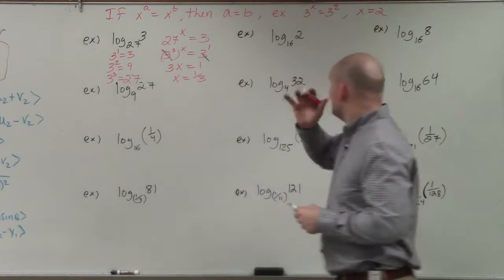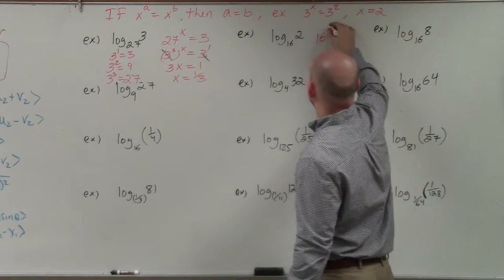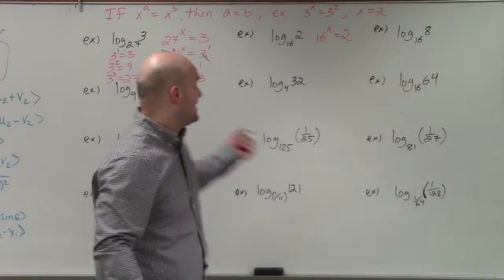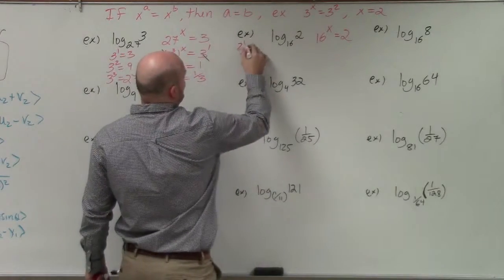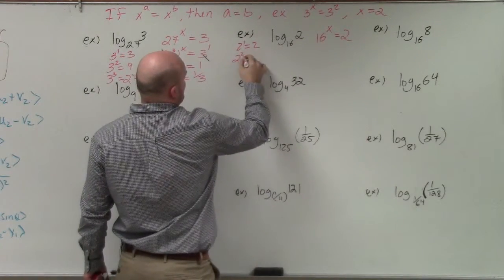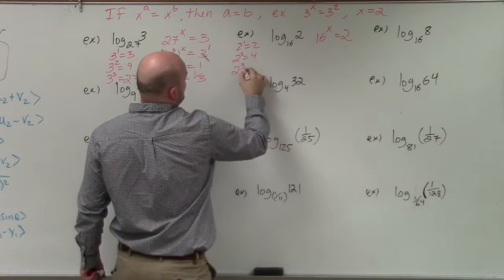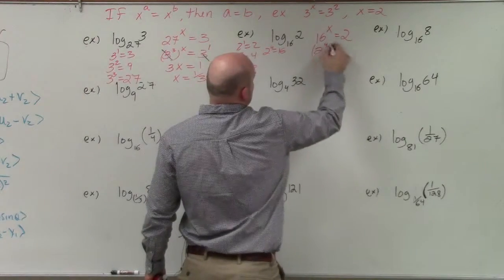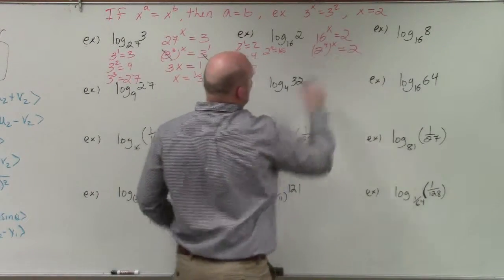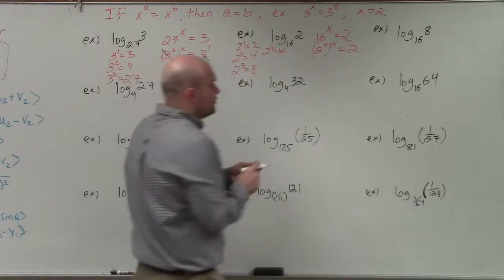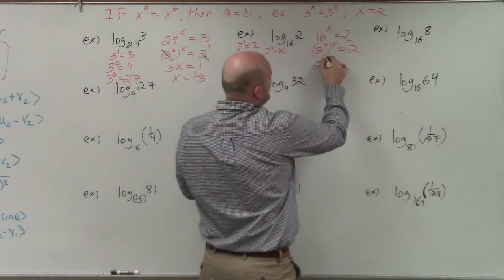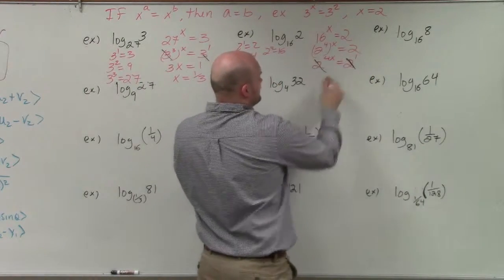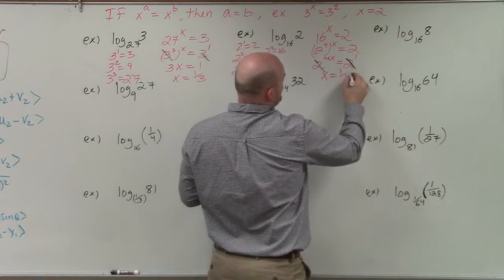For the next example I do the same thing. I say: 16 raised to what value is going to equal 2? We know 2 to the first is 2, 2 squared is 4, 2 cubed is 8, and 2 to the fourth is 16. So I rewrite this as 2 to the fourth raised to the x equals 2. Using the power rule, that's 2 to the 4x equals 2 to the first, so 4x equals 1, and x equals one-fourth.